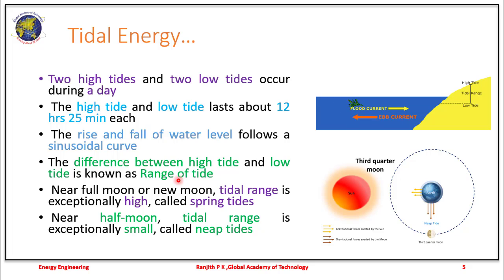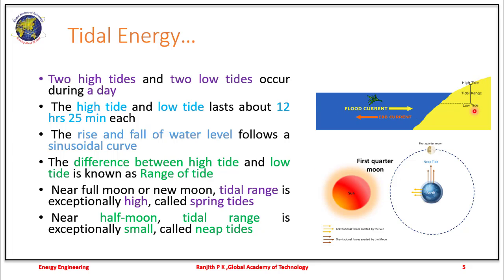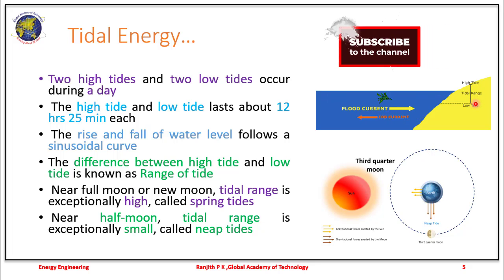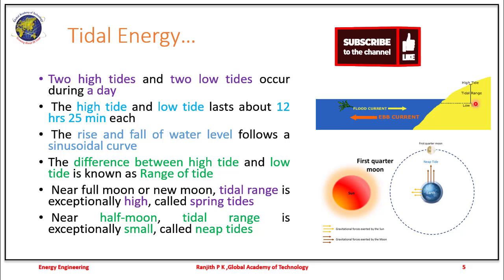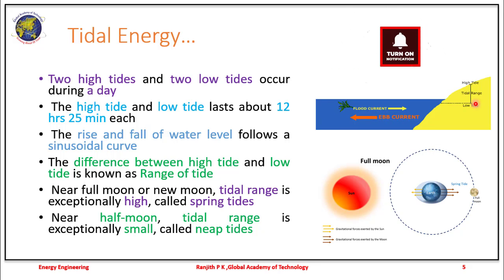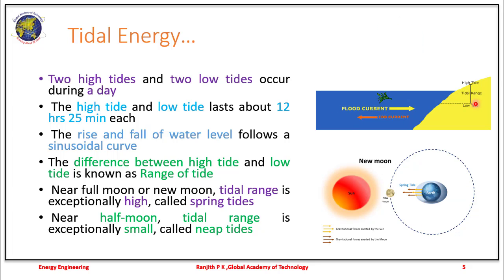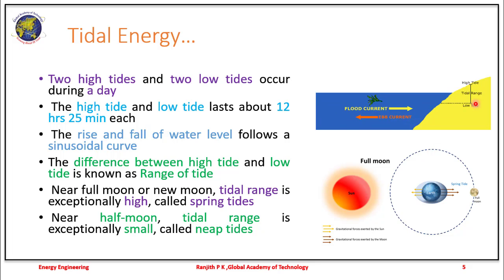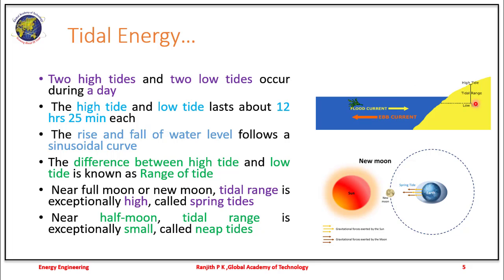The difference between the high tide and the low tide is known as the tidal range. Usually near the full moon or the new moon, the tidal range is very high — hence we are advised not to venture out near the sea — and this is called spring tides. Near the half moon, the tidal range is exceptionally small, which is called neap tides.